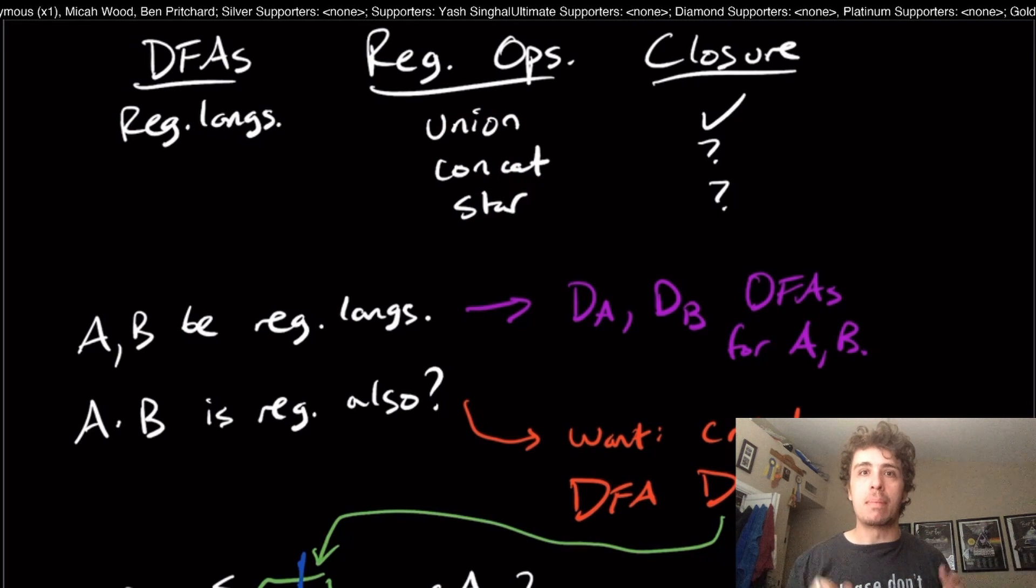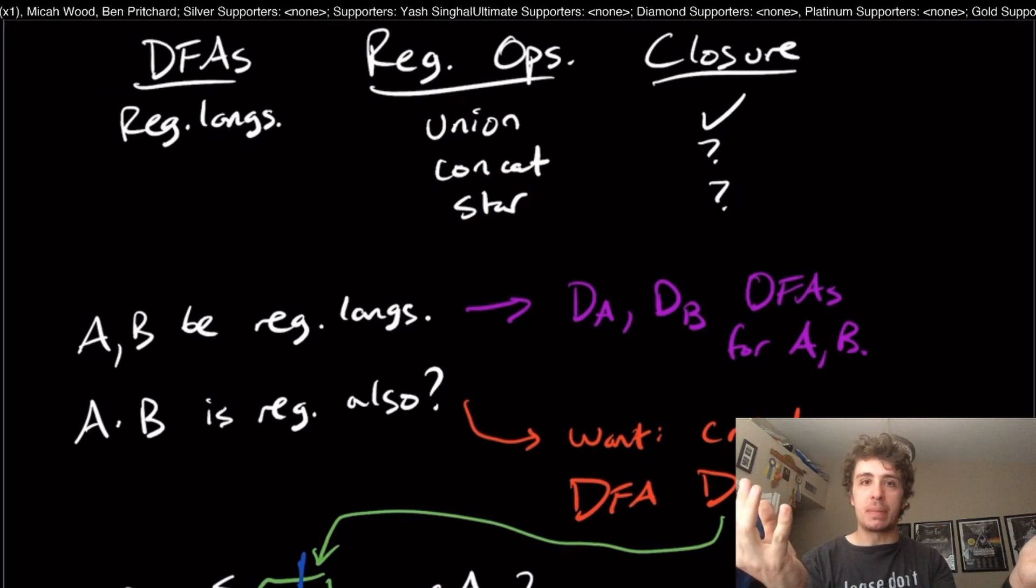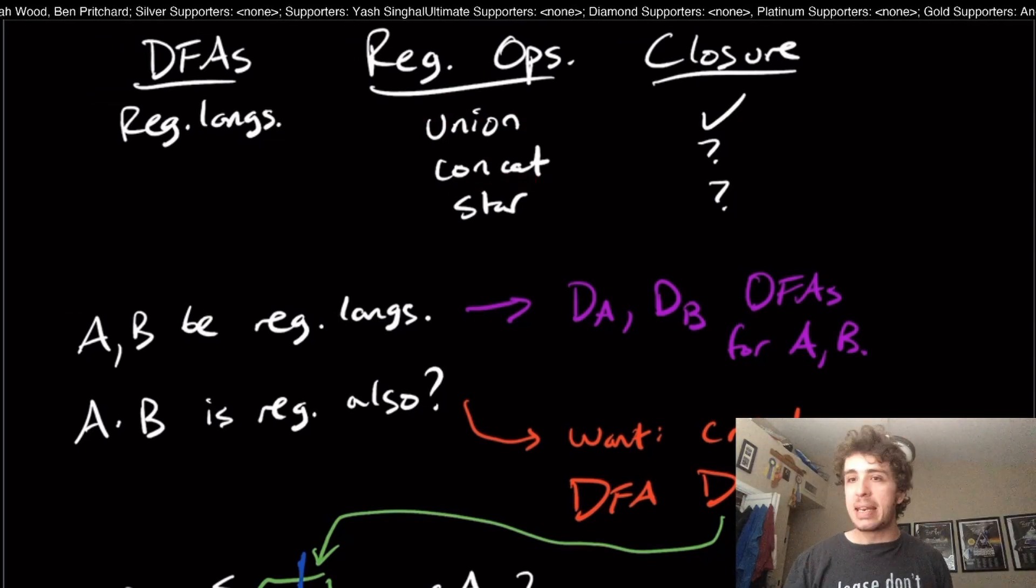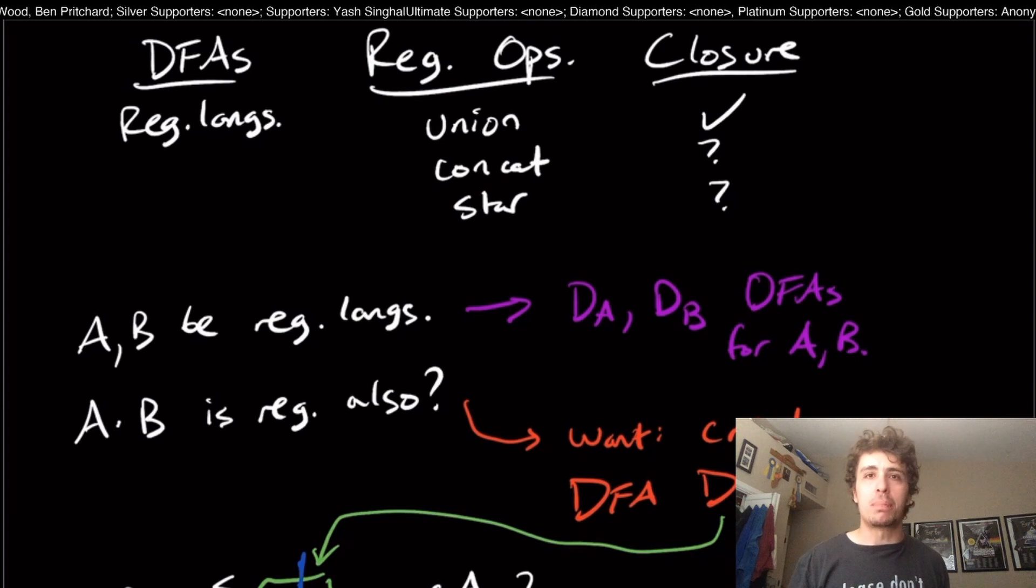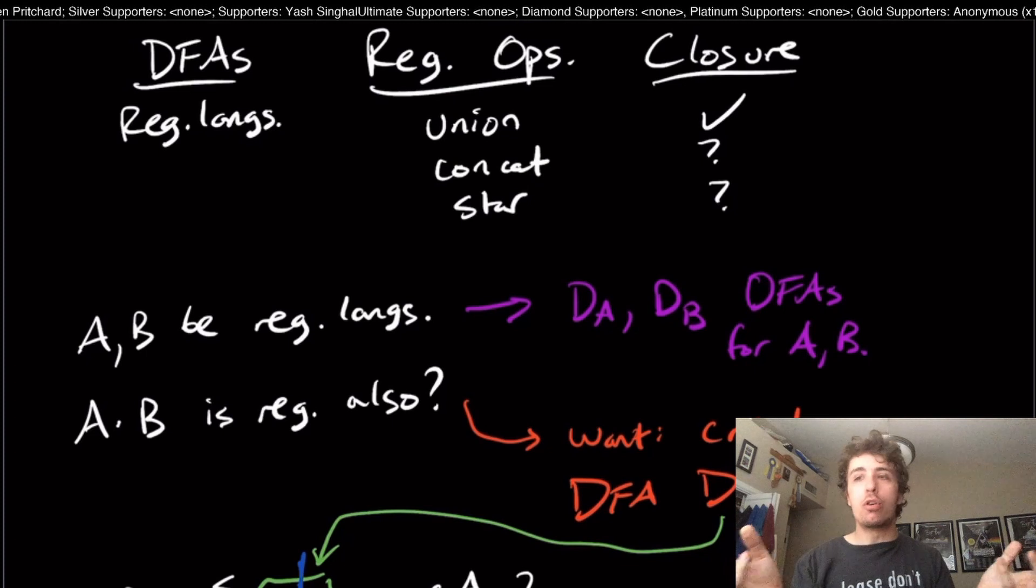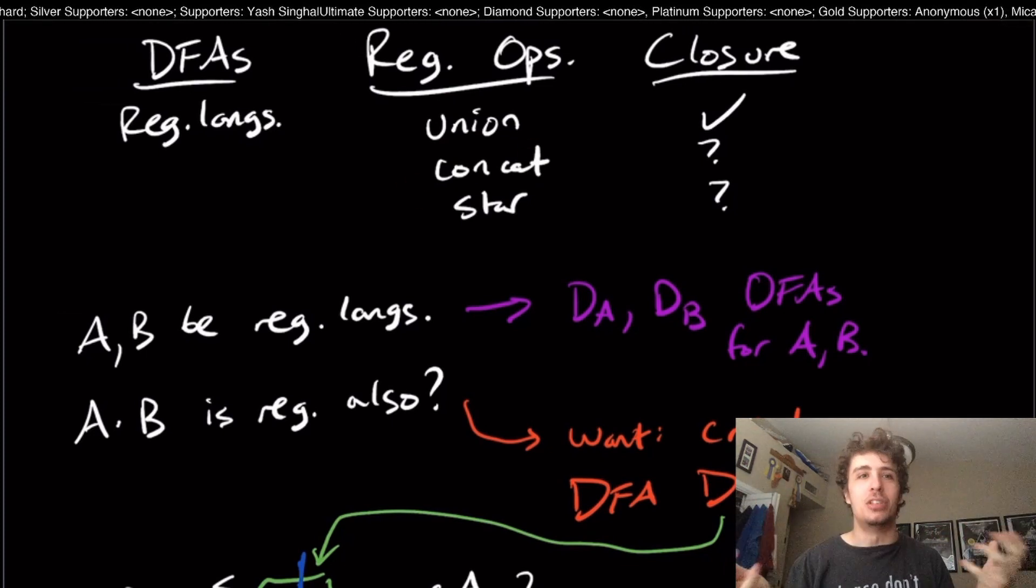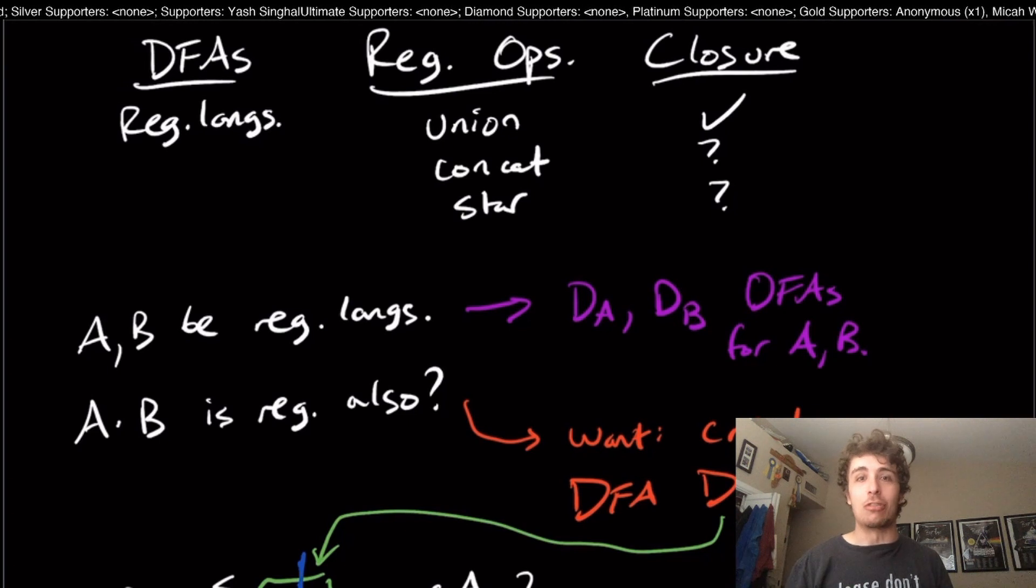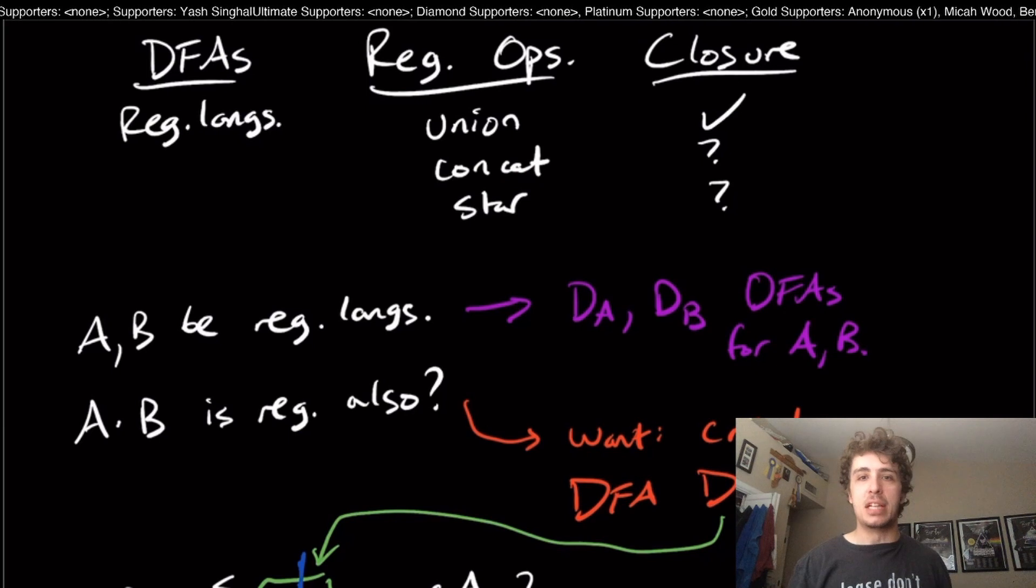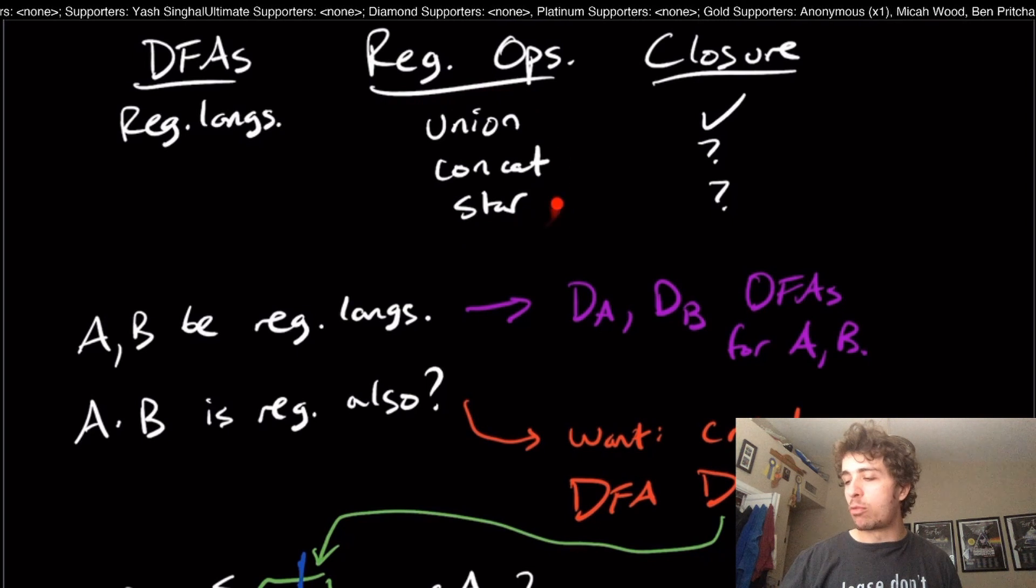The main reason is you can think of these as breaking up the problem into subproblems. For union, if you have something or something else, then if you solve both pieces, you can combine them together. Concatenation you can think of like multiplication with numbers. If you have two numbers and you multiply them together, if you know how to solve each of the original numbers, or you can think of them as languages here, if you know how to solve the original two languages, then I can combine them in this way. For star, it's the same story.